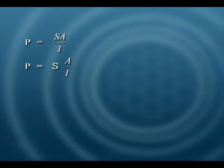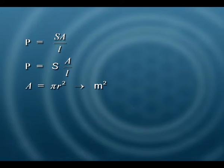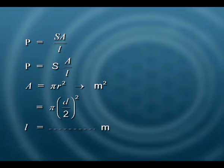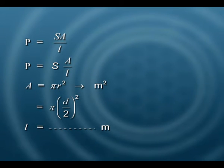Next, calculate the specific resistance of the material of the wire using ρ = S × A / L. Here, A is calculated using π(d/2)², where d is the diameter measured by the screw gauge. Remember to keep all units consistent: convert area to square meters and length L to meters. Whatever values were recorded in centimeters or millimeters in the lab must be converted before performing calculations.